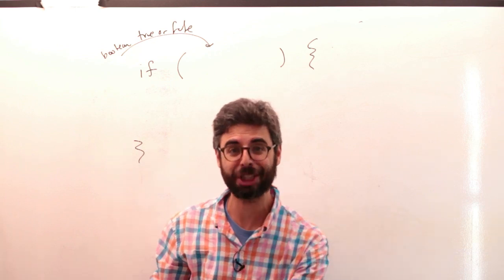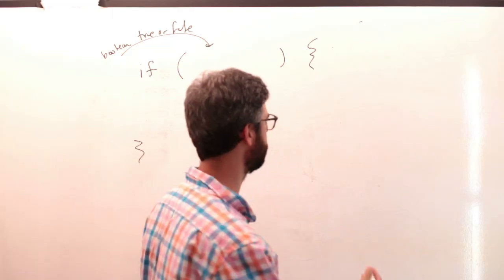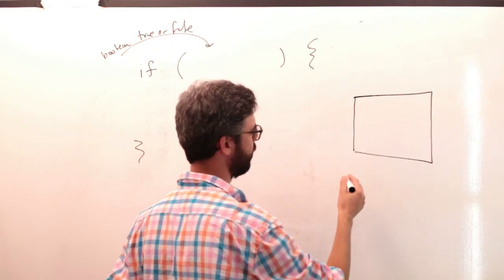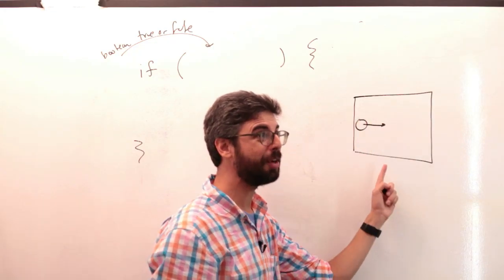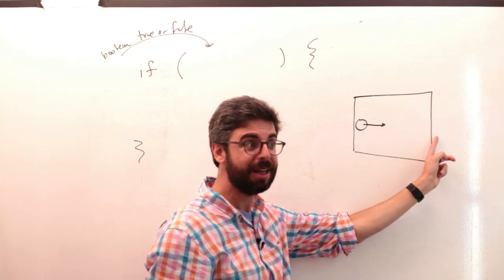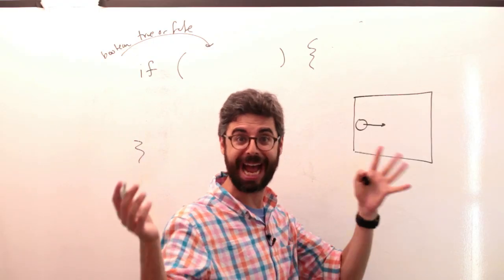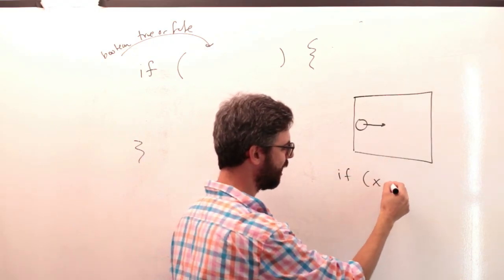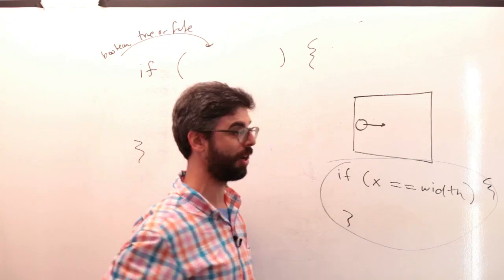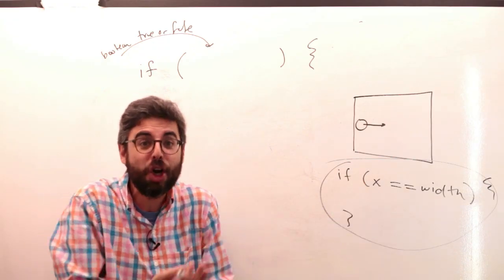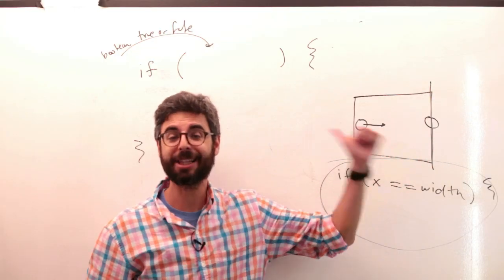Let's think about what condition has to be met in order for that circle — the ball, so to speak — to turn around. Here is the canvas, here is the circle moving along. If the location of this circle is at the edge, that's the condition — that's when it should turn around. So you might think: the variable's name is x, so if x is equal to width, that's the right idea. If the circle's location equals the width of the window, that's when you want to turn around.